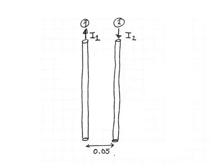So we know that wire 3 will be attracted to wire 1 and repelled by wire 2. If wire 3 was on the left side of the picture, the force that 1 exerts on 3 would be to the right, and the force that 2 exerts on 3 would be to the left. However, wire 1 carries more current than wire 2, so if we're closer to wire 1, the force that 1 exerts on 3 will be greater than the force that 2 exerts on 3. These two forces cannot cancel on the left-hand side of the picture.